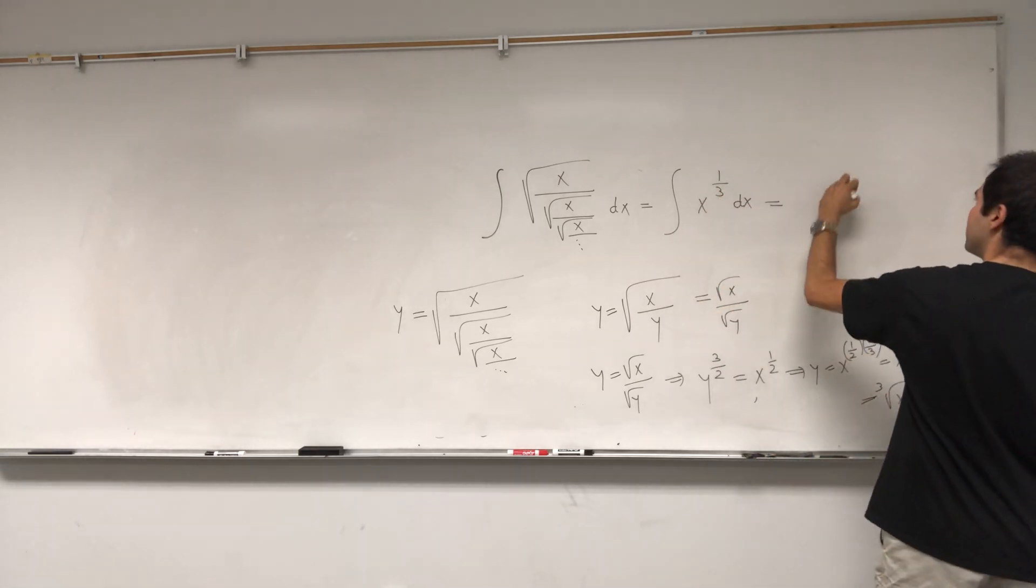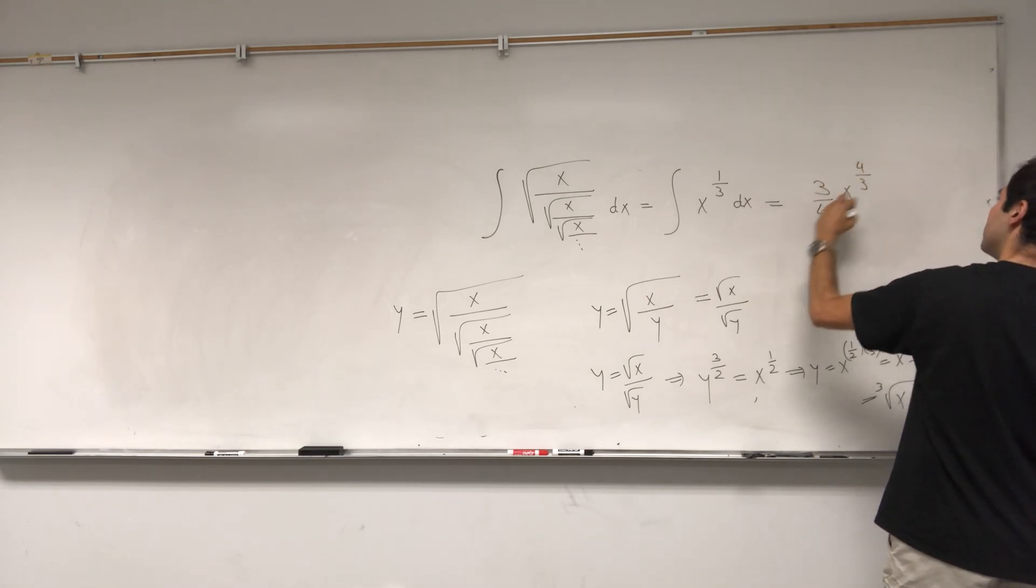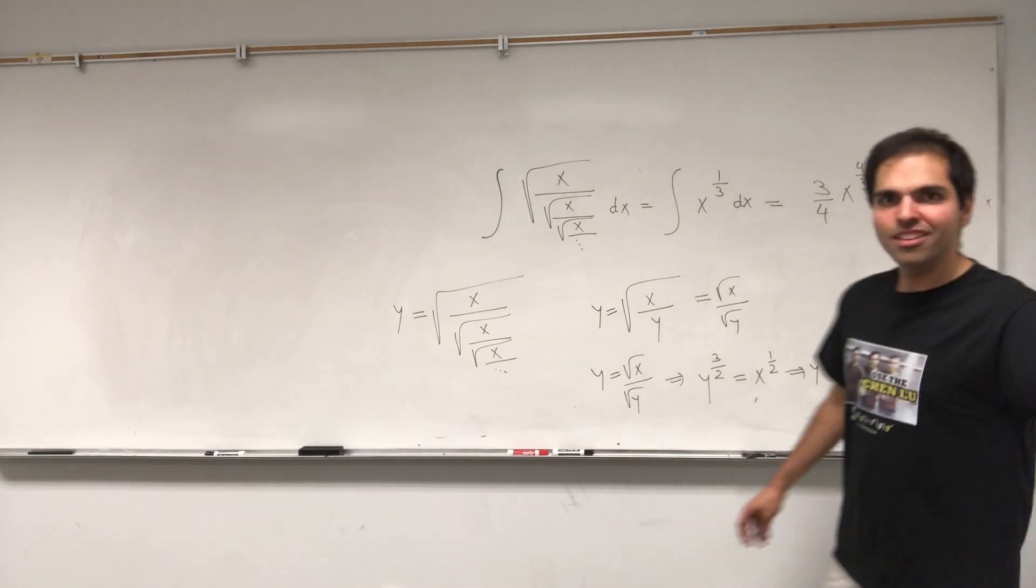And that becomes x to the four thirds times three quarters plus a constant. And there you go.